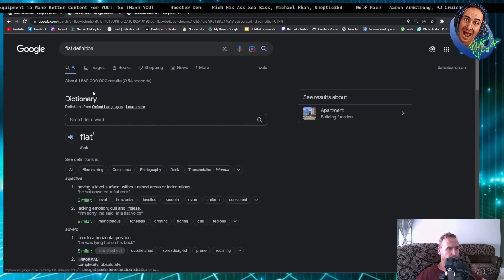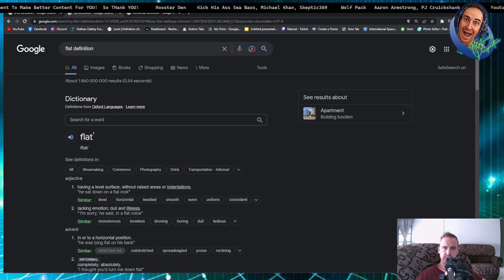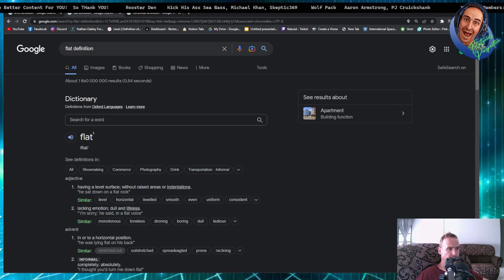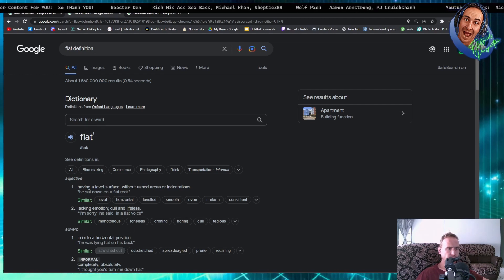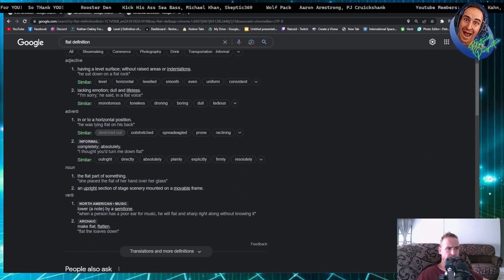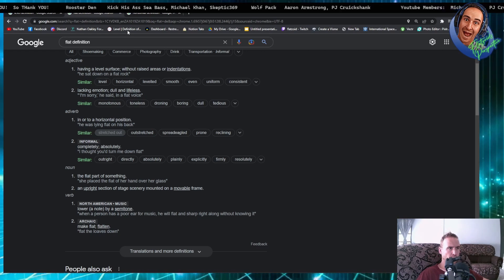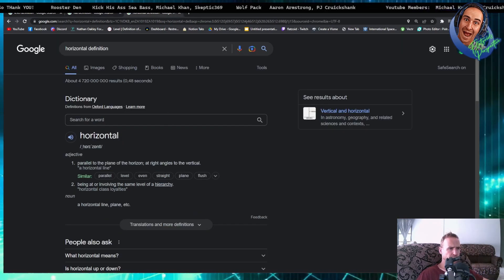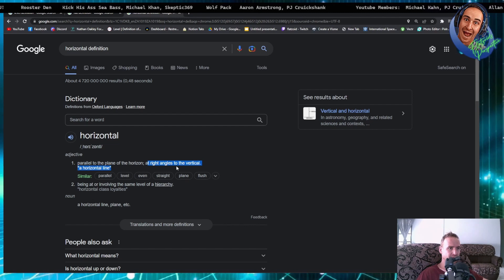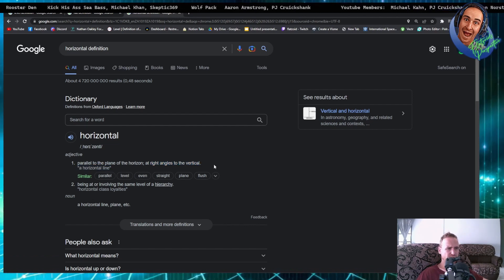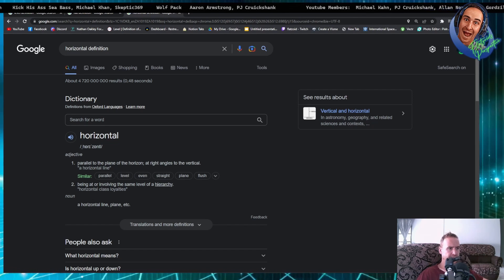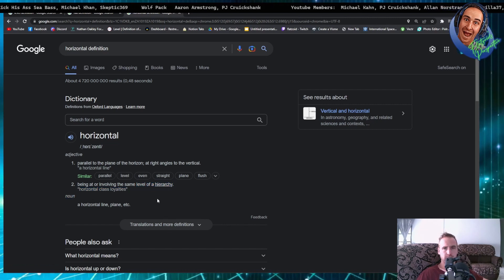Let's go look what flat definition is. Flat. Having a level surface. Without raised areas or indentations. Into our horizontal position. A flat, the flat part of something. No curve. Let's see what's horizontal. Parallel to the plane of the horizon. So horizon is horizontal, guys. At right angles to the vertical. Ouch, you know, elevation angles. A horizontal line or plane. Being involved in the same level. No curve.